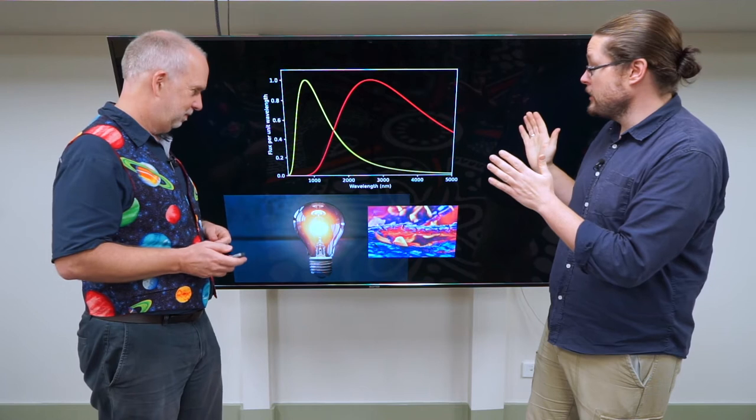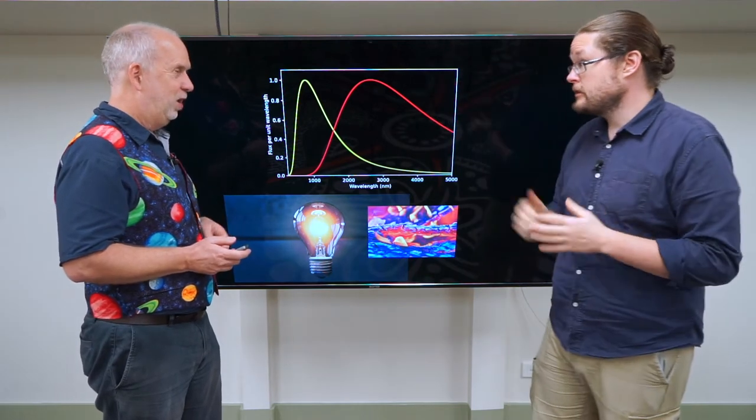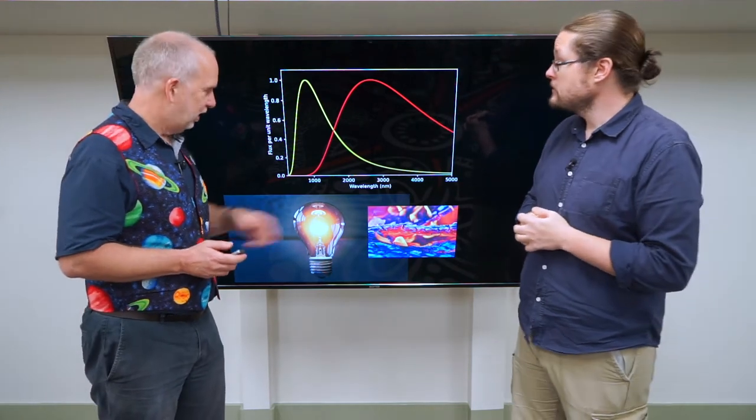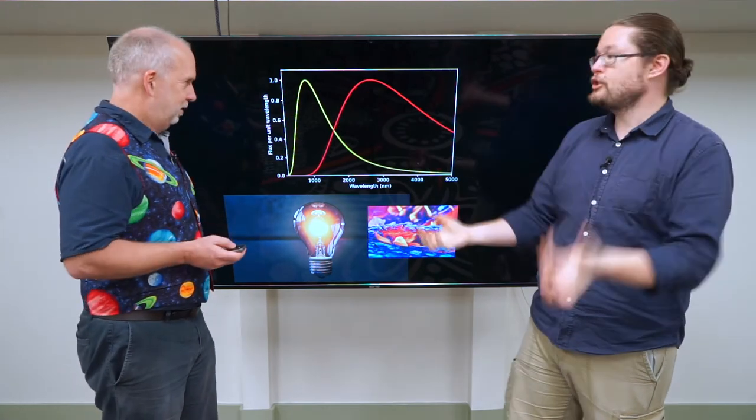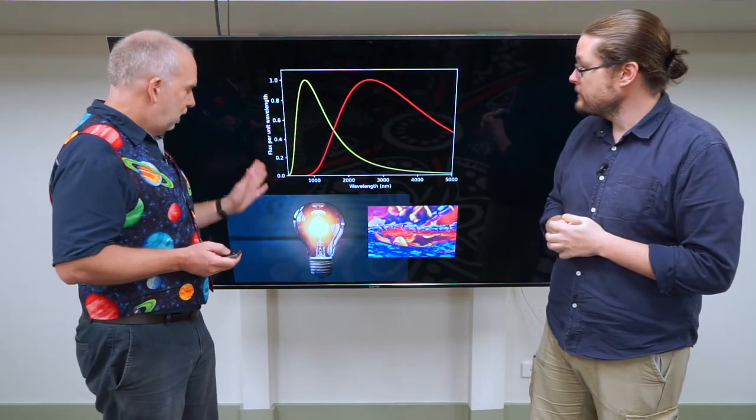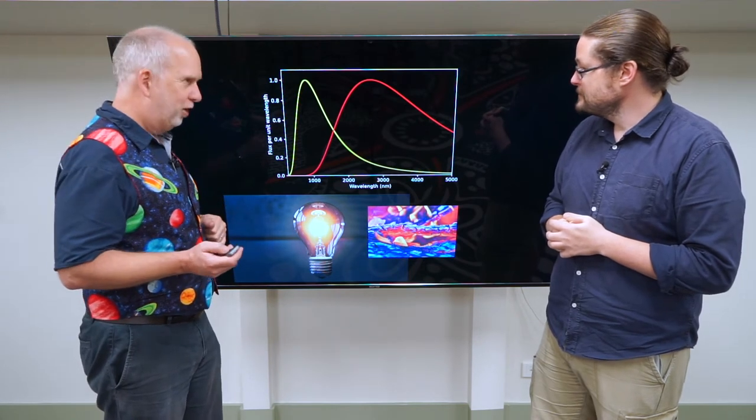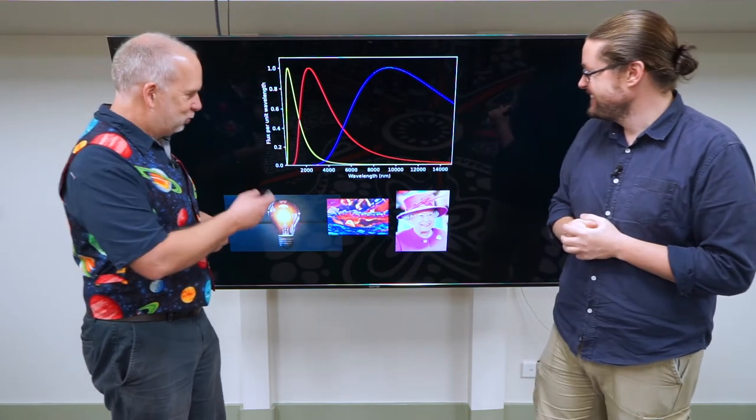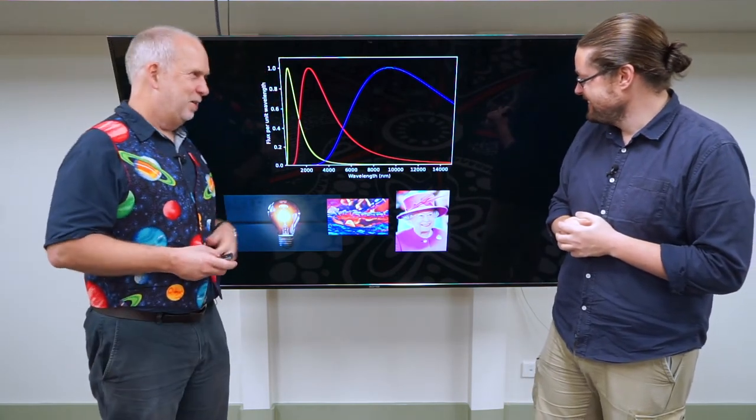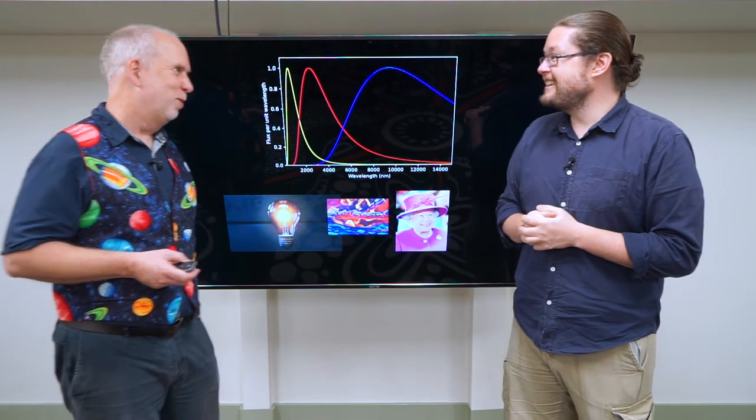How about if we go even cooler still? What's cooler than a campfire? Maybe she is. Let's imagine we take a spectrum of her. Next time I'm invited to the palace, I'll bring a spectrometer along with me. Everyone always packs their spectrometer when they visit the Queen. She would be at a temperature of about 35 Celsius, about 300 Kelvin.